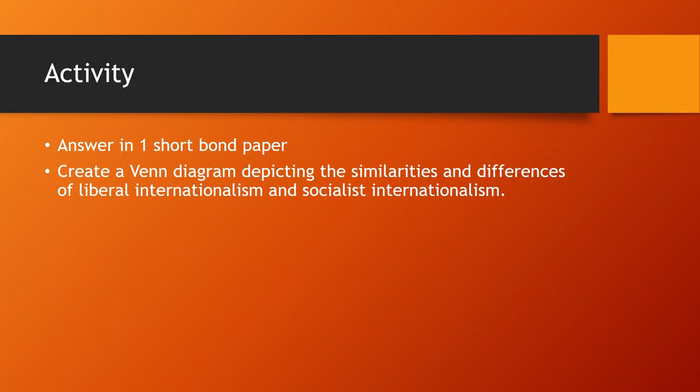So this is your activity. In one short bond paper, create a Venn diagram depicting the similarities and differences of liberal internationalism and socialist internationalism.